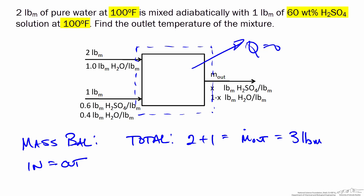To find the composition, we can use a balance on either H2SO4 or water. I'll use a balance on H2SO4. On the inlet side, the mass fraction of the H2SO4 solution going into the mixing unit is 0.6, and we multiply that by the total mass of that stream, which is 1 pound. That equals the mass fraction leaving the mixture, which is x, times the total mass of 3. Solving for x, x equals 0.2.